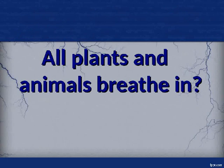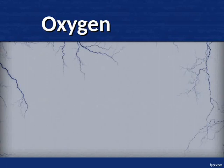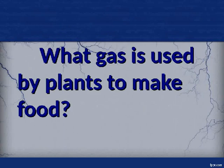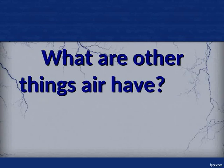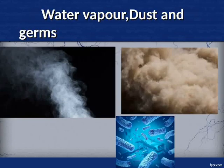All plants and animals breathe in oxygen. What gas is used by plants to make food? Carbon dioxide. What other things does air have? Water vapor, dust and germs.